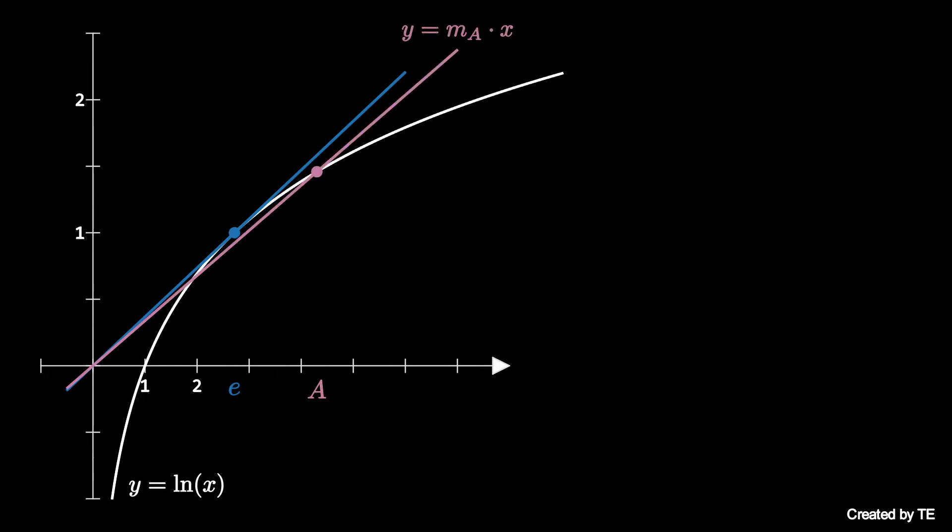Consequently, if e is less than or equal to a and a is less than b, then we see that the slope of the line passing through the point a natural log of a is greater than the slope of the line passing through b natural log of b.